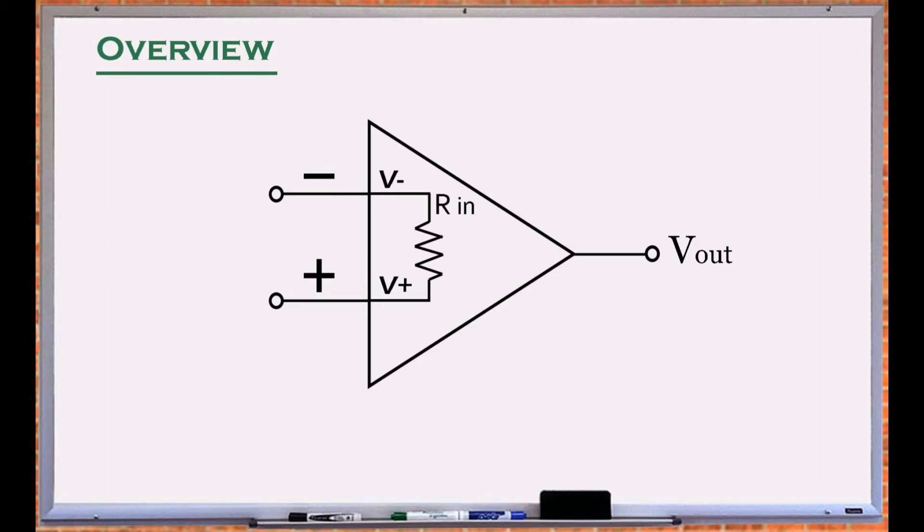Generally the input resistance of an amplifier R_in is large. Ideally no current flows through the input terminals of an amplifier.